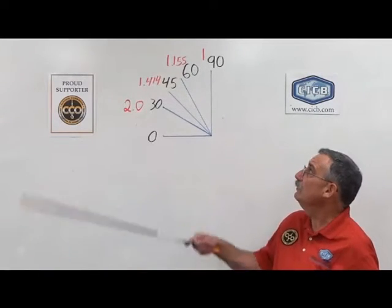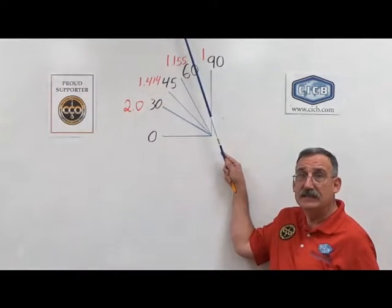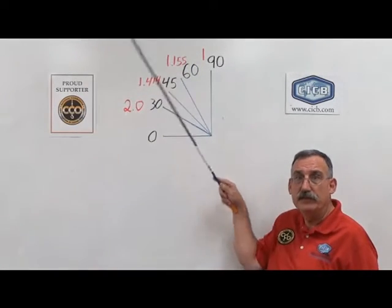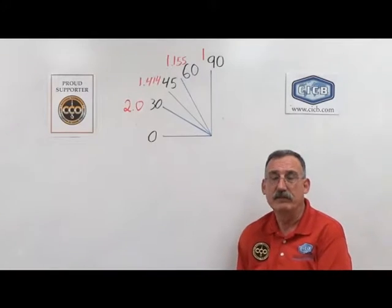Now, when your sling is in between a 90 and a 60 degree angle, our sling angle factor we're going to use for 60 degrees, or 1.155.